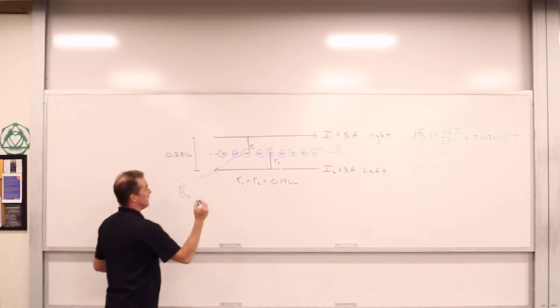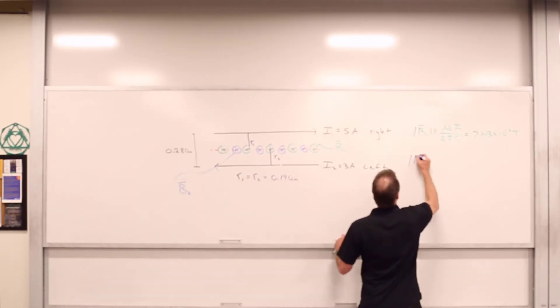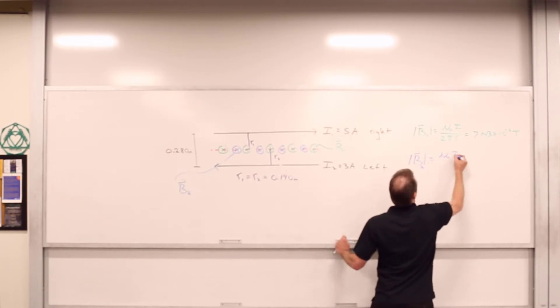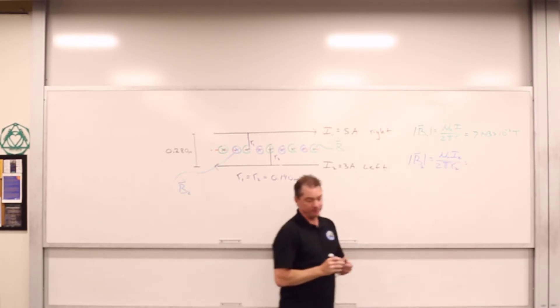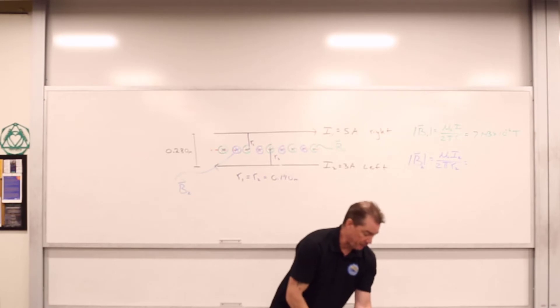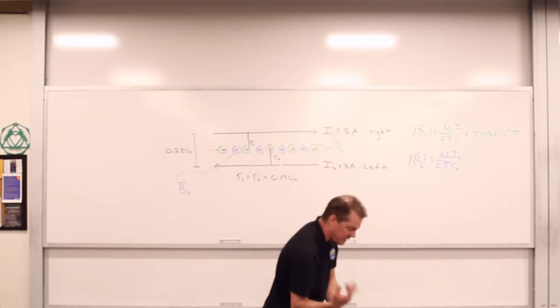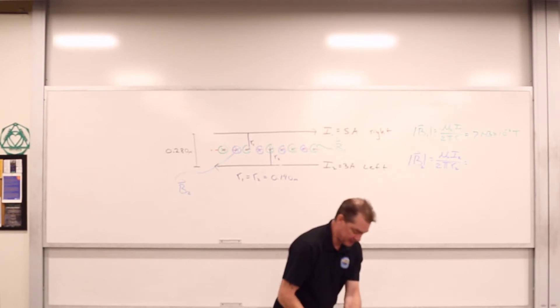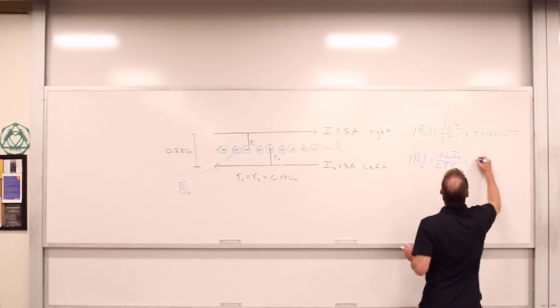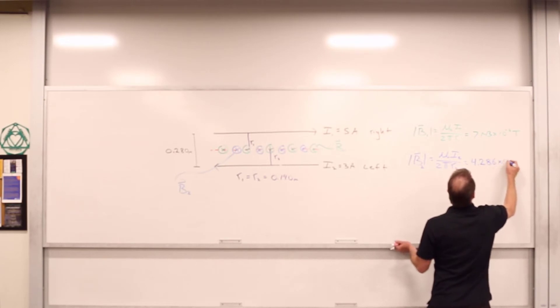Great. And we can go ahead and calculate what the magnitude of B2 is, as being mu_0 I2 over 2 pi R2. And well, we've got all the same quantities except for I is different. So let's just make a little switch there. We'll change that to 3. And we've got ourselves 4.286 times 10 to the negative 6, 4.286 times 10 to the negative 6 Tesla.